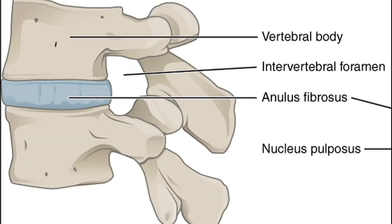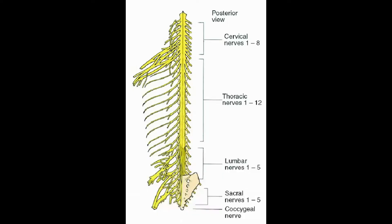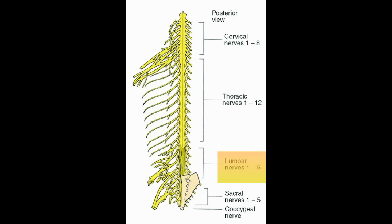Through the intervertebral foramen passes the spinal nerve. There are 31 pairs of spinal nerves: 8 cervical, 12 thoracic, 5 lumbar, 5 sacral, and 1 coccygeal.